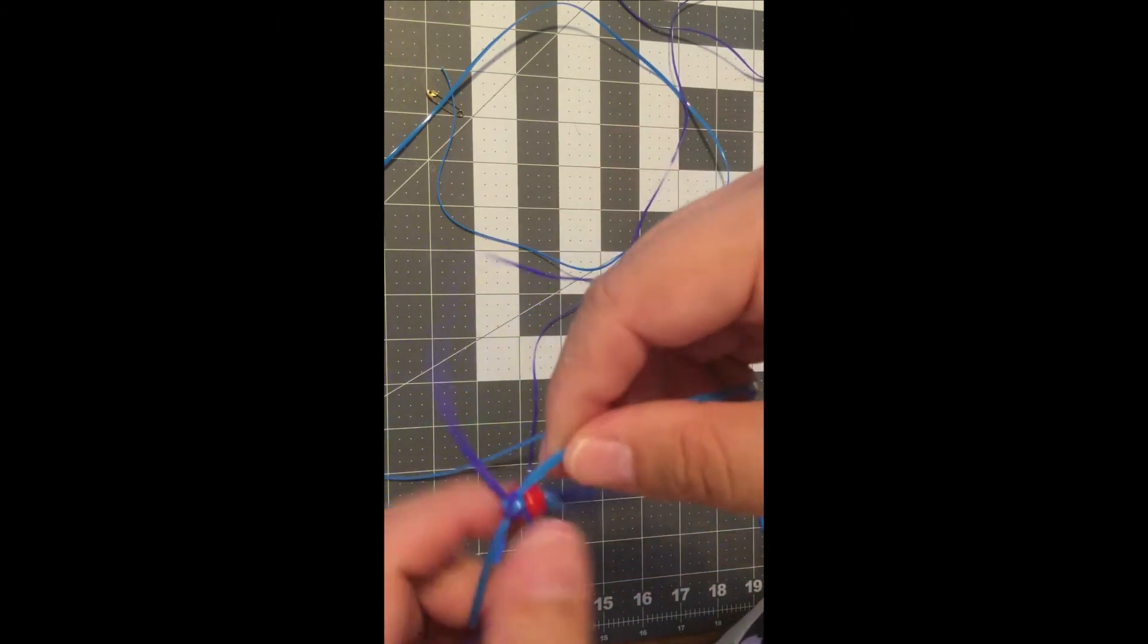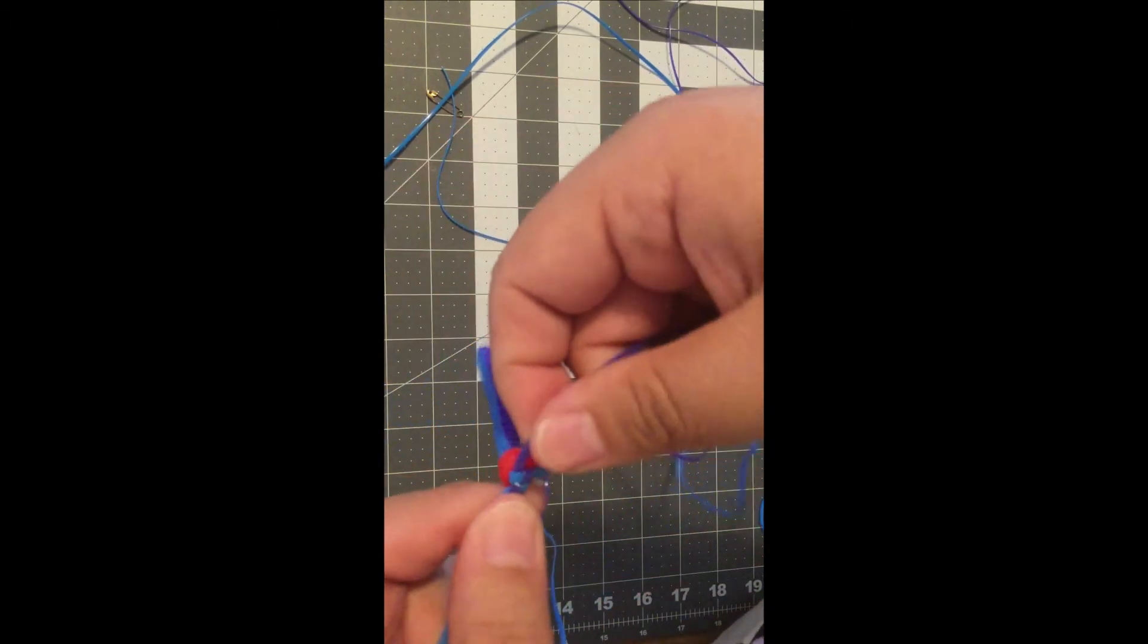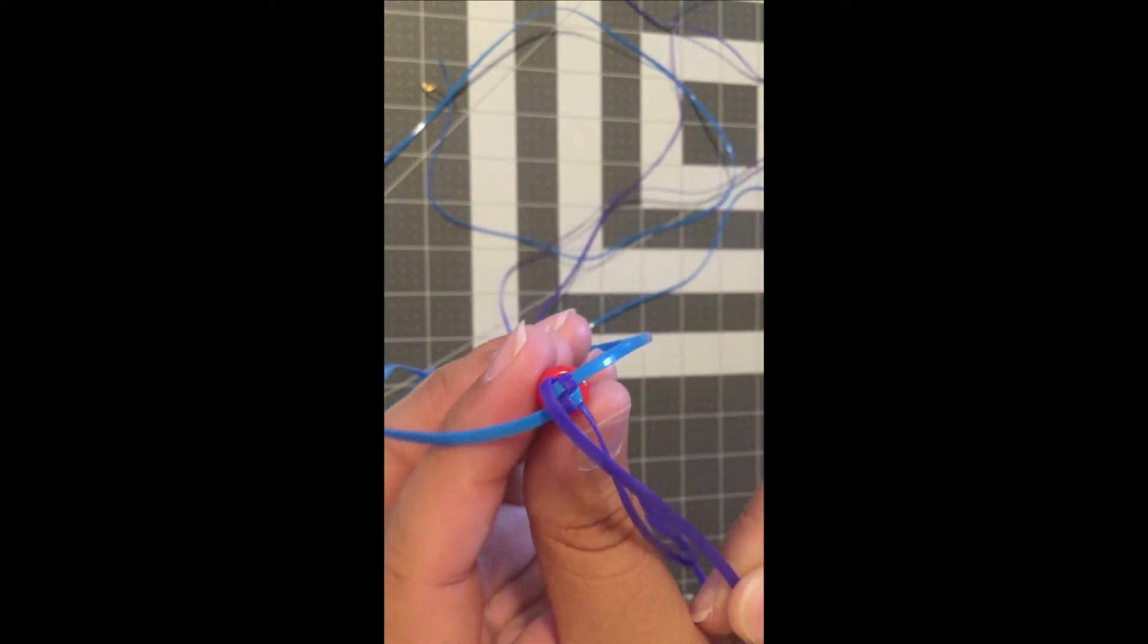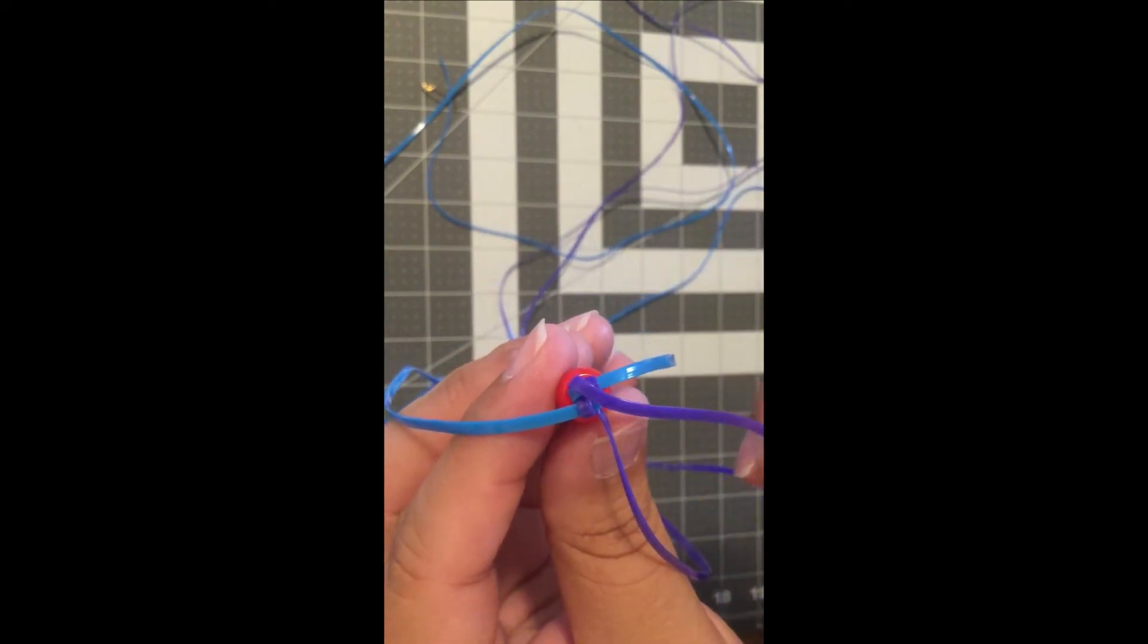Now that you did one square, we're going to do a circle shape between the beads. To do a circle shape, instead of going straight across, you place your loop cords at a diagonal.